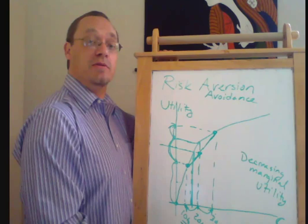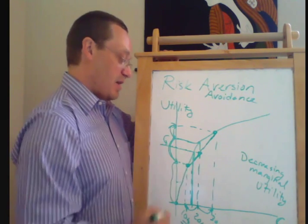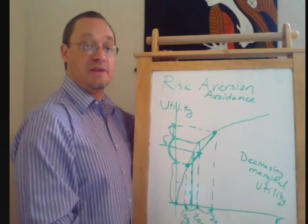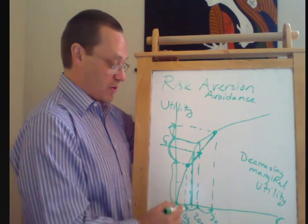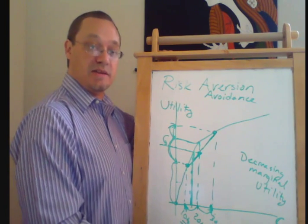So they're willing to pay to avoid the uncertainty. So another way of saying that would be they would be willing to pay $5,000 to avoid this coin flip between plus $10,000 and minus $10,000.